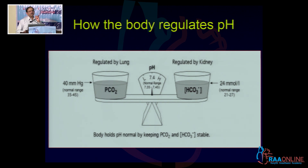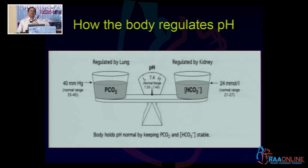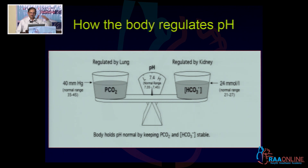The key concept to keep in mind is that compensation is an attempt by the body to minimize the effect of the disturbance on the pH, not to neutralize or to normalize the pH. It is an attempt towards normalization, but it never actually results in absolute normalization.